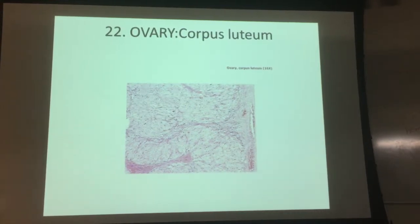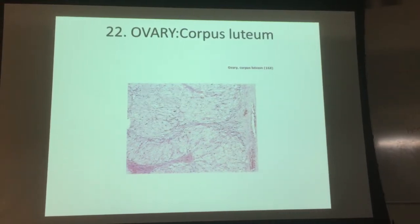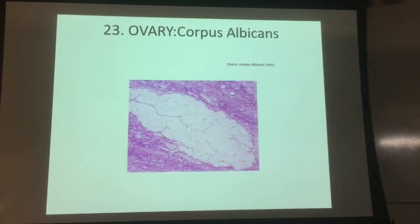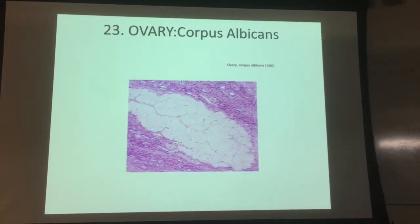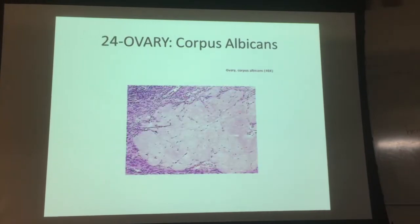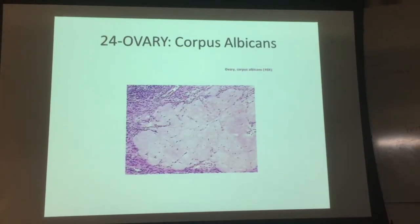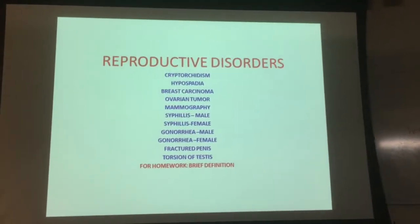This is the corpus luteum — make sure it looks yellow, highlight it. Corpus albicans — that's white. Albicans means white.